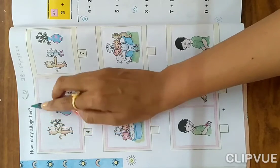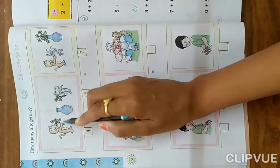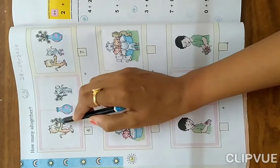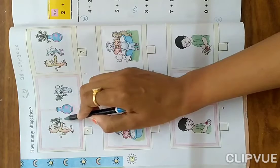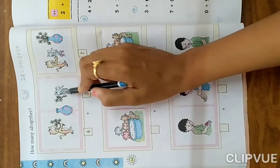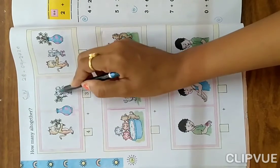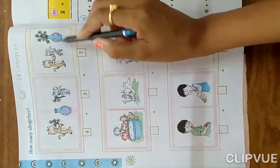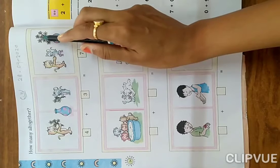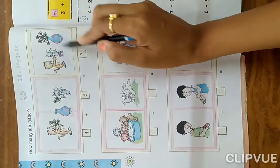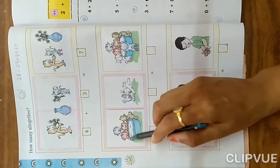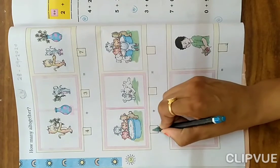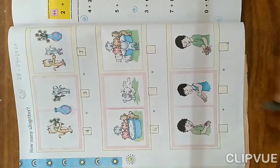See, look at here, one example. In this cat's hands, how many flowers? One, two, three, and four flowers. And in this, one, two, and three, three flowers. So total how many? One, two, three, four, five, six, seven flowers.